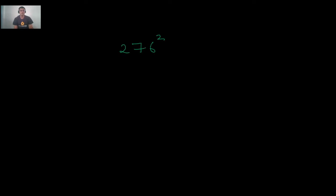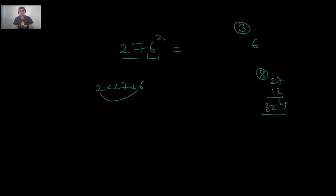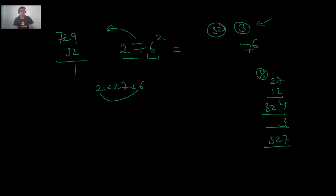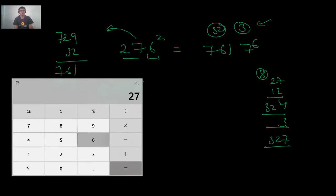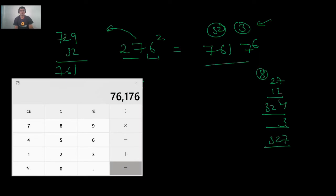Let us practice with 276². Parts: a = 27, b = 6. Step 1: 6² = 36; write 6, carry 3. Step 2: 2 × 27 × 6 = 324; add 3 to get 327; write 7, carry 32. Step 3: 27² = 729; add 32 to get 761. Result: 76176. Verification: 276 × 276 = 76176. Correct!